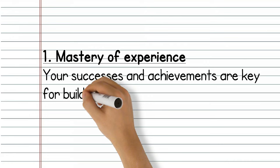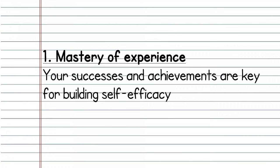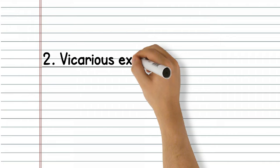Increasing self-efficacy can be achieved by tracing the sources of it. There are four main sources of self-efficacy. Number one: the most important and reliable source of self-efficacy is mastery of experience. Your successes and achievements are key for building self-efficacy. Conversely, your failures and shortfalls can decrease it. This may explain why someone's self-efficacy to go running at 6am might be low, because they have not built up enough successful experiences of completing that task at that time, and any unsuccessful experiences like planning to get up but going back to bed instead can decrease it further.